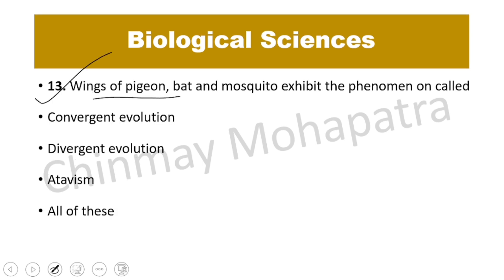Question number 13. Wings of pigeon, bat, and mosquito exhibit which phenomenon? They have different origins but perform the same function. This is convergent evolution, and the organs involved are analogous organs.